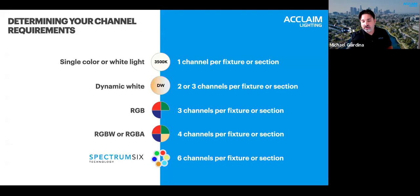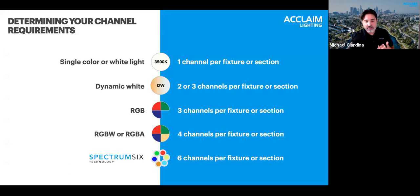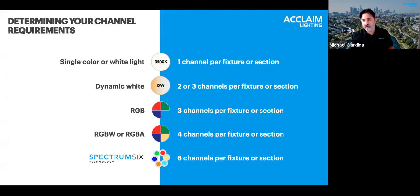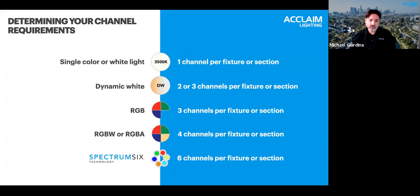Looking overall at these options, when reviewing a specification we can count up the channels based on the type of fixture to determine how many individual channels are required for the desired control. Some fixtures may have additional channels for things like a dedicated dimmer or a zoom. Most Acclaim fixtures don't have these, but if you encounter other manufacturers' fixtures they may, so take that into consideration.